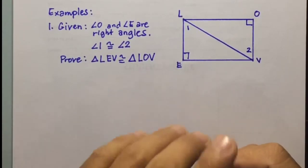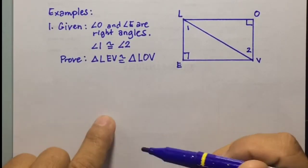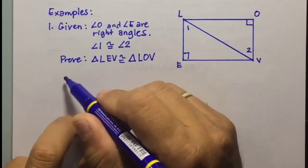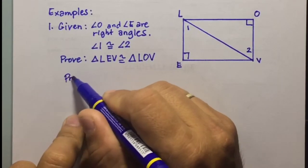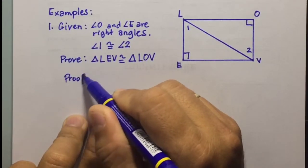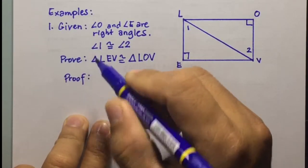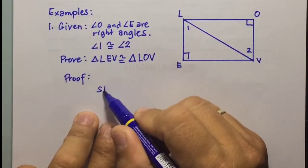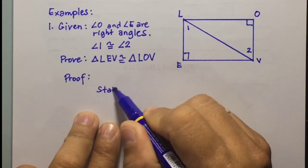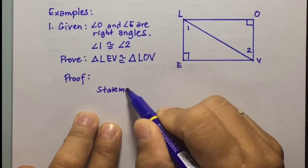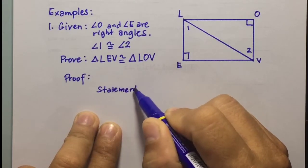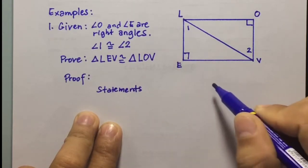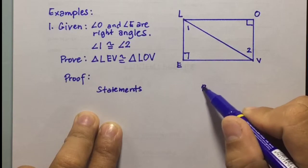We're going to use the two-column proof. We're going to write the proof with the first column being the statements and the second column being the reasons.